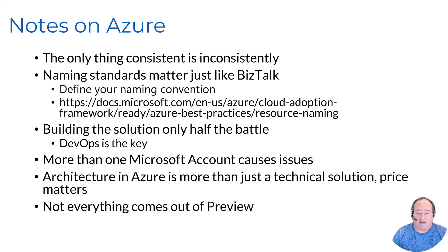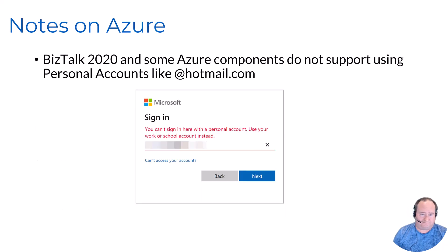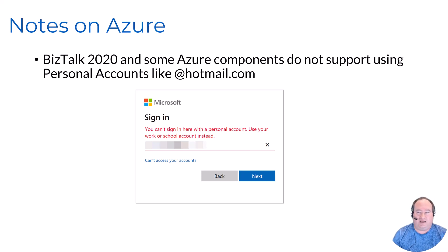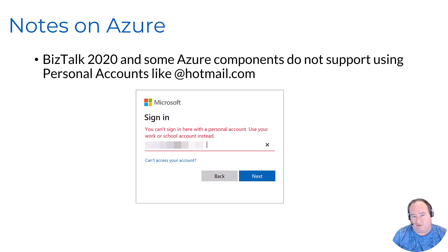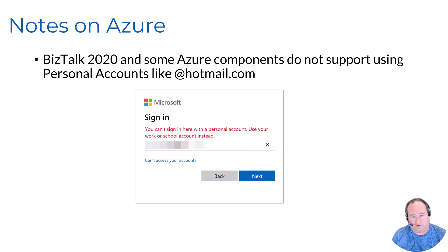Not everything comes out of preview — just want to mention that again. Something else I've run into: about 25 years ago, two brothers created a site called Hotmail.com. I've used that Hotmail account ever since as my main email. Microsoft bought them a few years after they opened. Just recently, the past two or three years, I've been having a lot of issues using my Hotmail account with Microsoft services. A lot of things don't like personal accounts — BizTalk 2020 connecting to Azure is one of them. It doesn't require a work or school account, so keep that in mind. I'm slowly transitioning away from my Hotmail email, but be aware you could run into some potential problems.